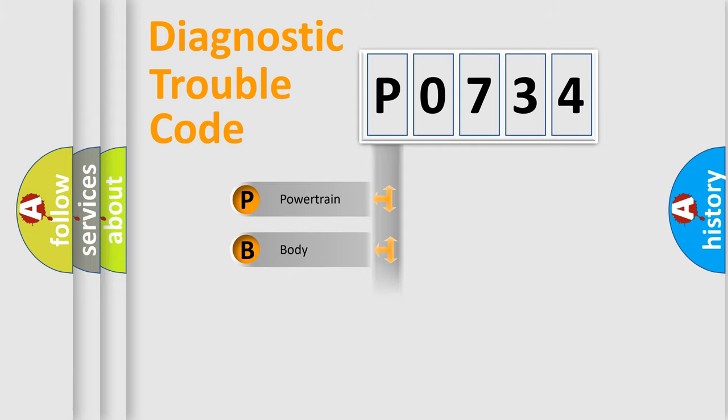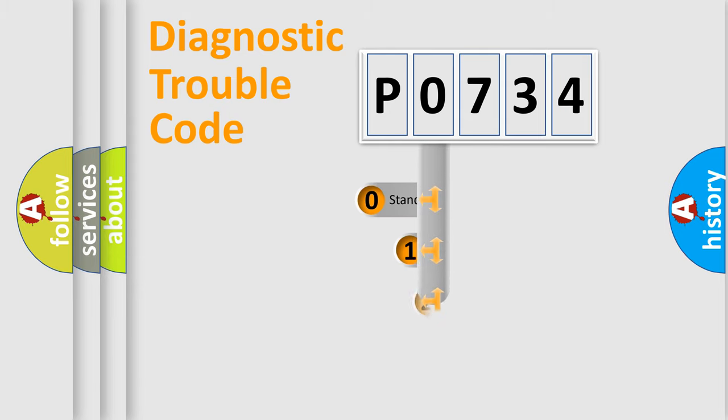We divide the electric system of automobile into four basic units: Powertrain, Body, Chassis, and Network. This distribution is defined in the first character code.